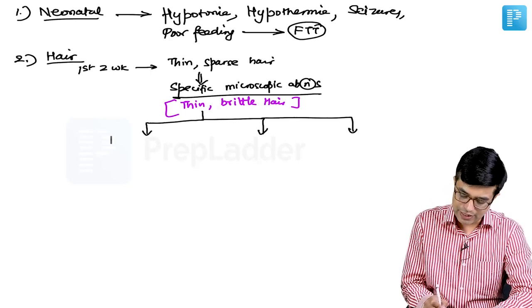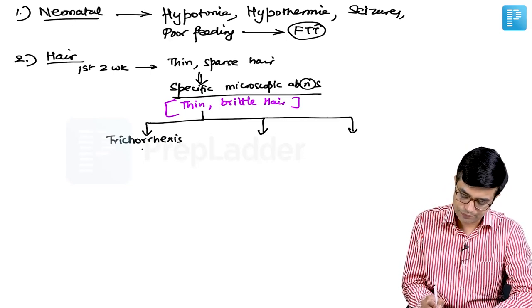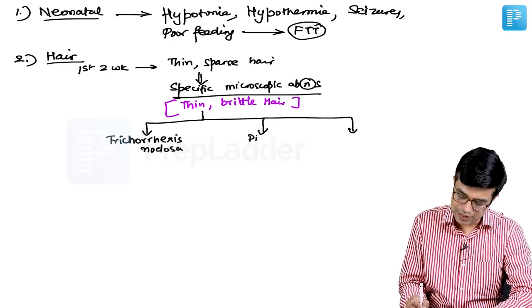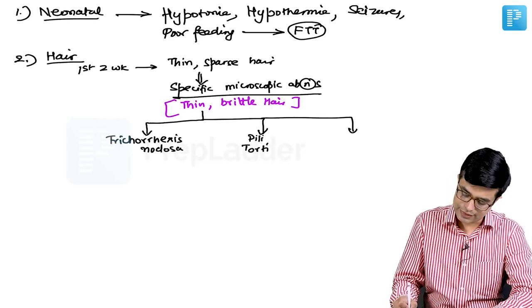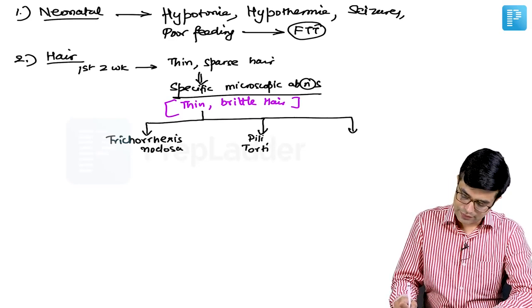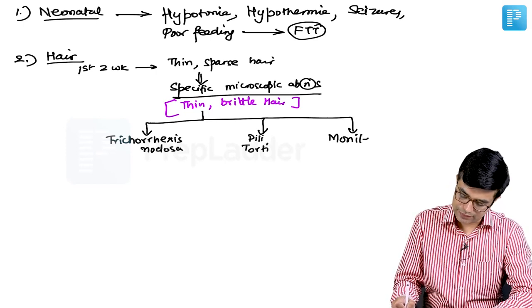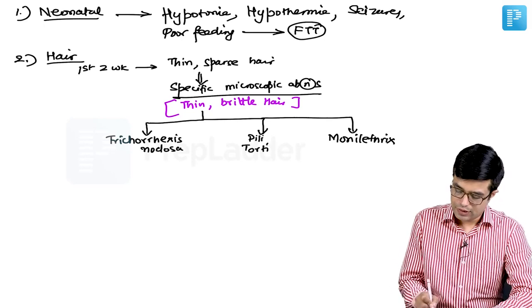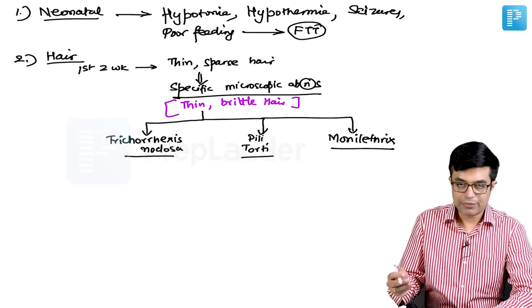You will have three microscopic abnormalities that you will find. First abnormality is called Trichorexis nodosa. Second is called Pili torti. And the third abnormality is Monilethrix.